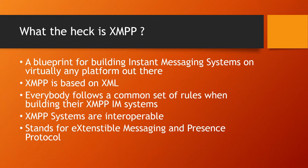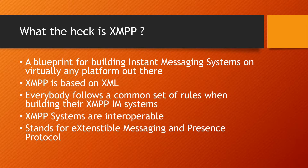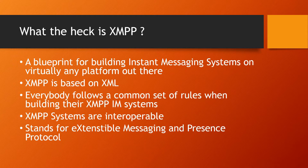XMPP is a protocol that allows us to build instant messaging systems. It is a blueprint that we follow to build chat applications. I can write an XMPP application for Android, I can write one for iOS, and all these applications follow the same protocols. So you can imagine a chat app on your Android phone and another on your Windows computer, and these apps need to speak a common set of language to exchange data. That's the big idea behind XMPP — a blueprint for exchanging messages between systems.